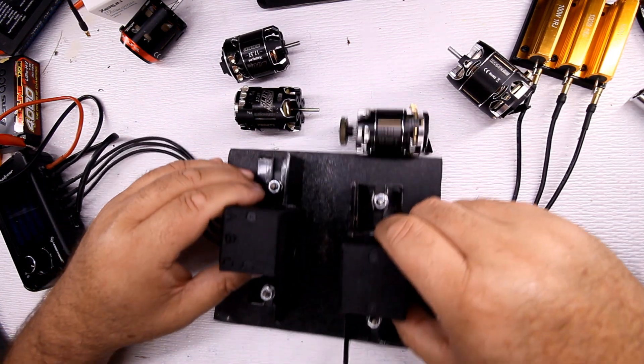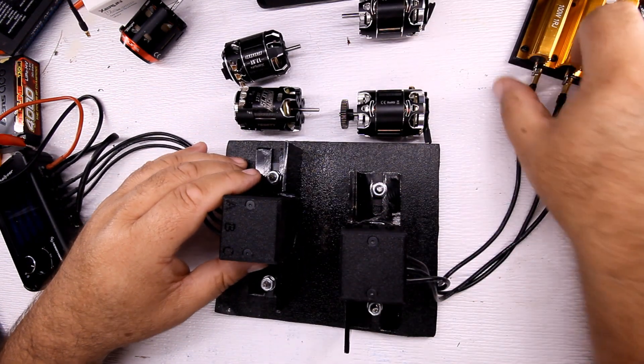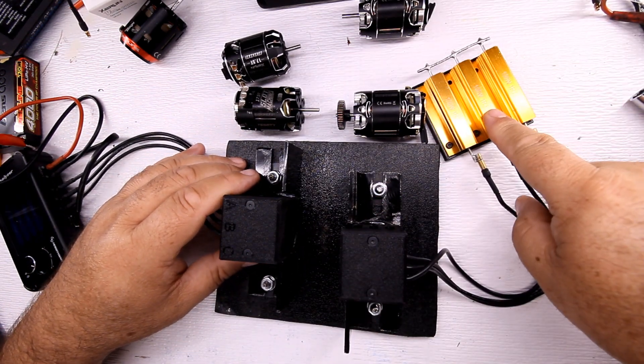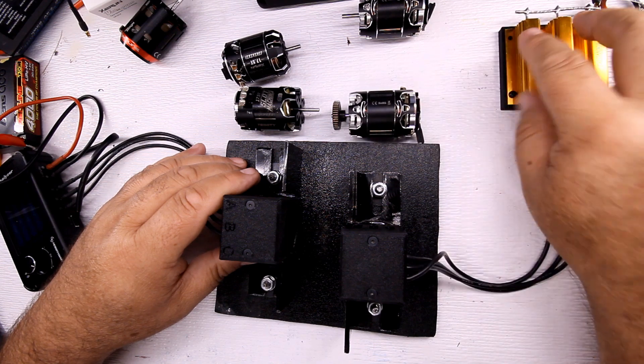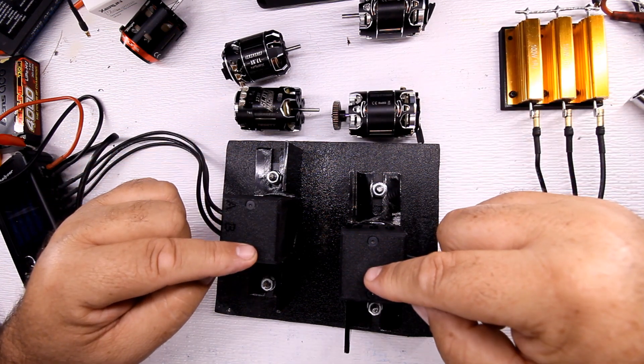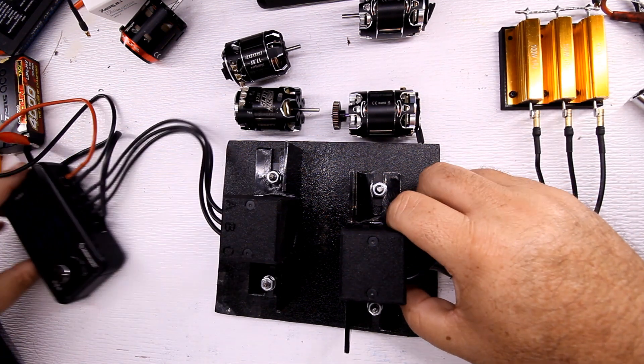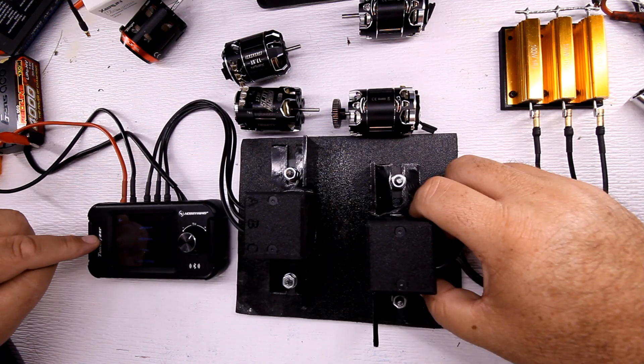Basically how this works is I have hooked up the resistors, the resistors from WMH Racing. These are the motor mounts from WMH Racing. I have it hooked up to the tunelizer.